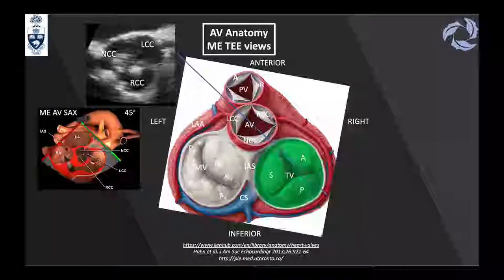When we want to assess the anatomy of the aortic valve, the first plane is the mid-esophageal aortic valve short axis, normally obtained at 45 degrees. The important part is to differentiate the leaflets. The interatrial septum between the left and right atrium helps with this: the leaflet associated with it is the non-coronary cusp because there is no coronary artery there. The right coronary cusp is always in relationship with the right ventricle, and the left coronary cusp is closer to the right side of the screen where we can see the origin of the left main.